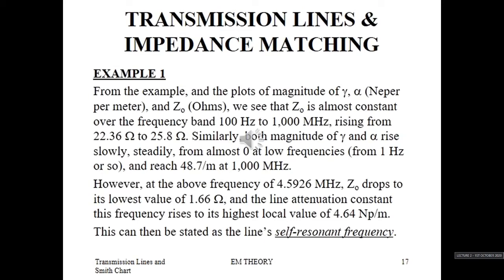Looking at the trends in the plots, Z₀ is almost constant over the frequency band from 100 Hz to 1 GHz, rising from 22.36 ohms to 25.8 ohms over that band. Similarly, both the magnitude of gamma and alpha rise slowly and steadily from almost zero at low frequencies, reaching 48.7 per meter at 1 GHz.